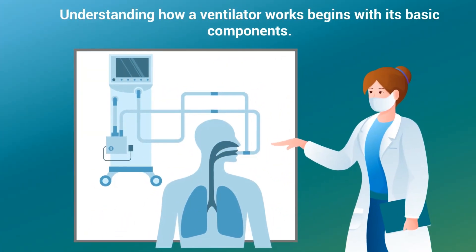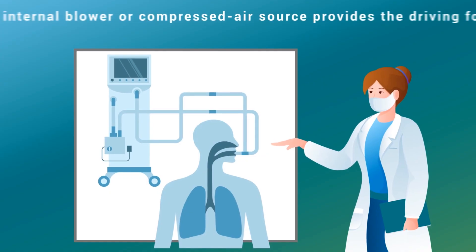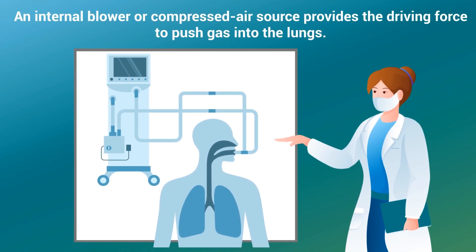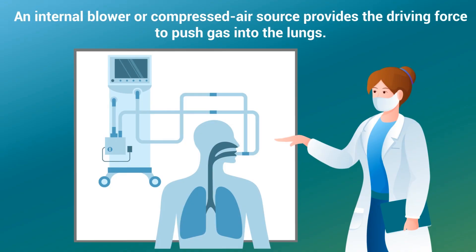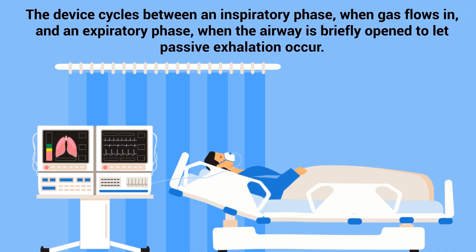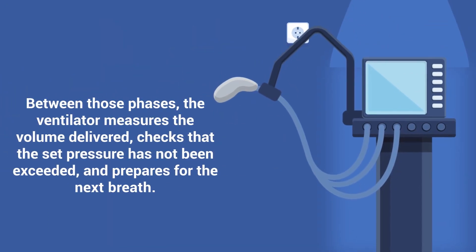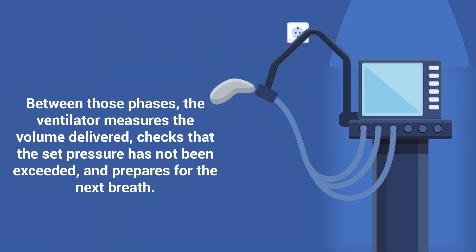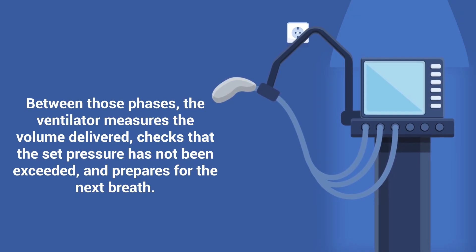Understanding how a ventilator works begins with its basic components. An internal blower or compressed air source provides the driving force to push gas into the lungs. Flow sensors track how quickly that gas moves, pressure sensors guard against excessive force, and microprocessors synchronize all of it according to the mode chosen at the bedside. The device cycles between an inspiratory phase when gas flows in and an expiratory phase when the airway is briefly open to let passive exhalation occur. Between those phases, the ventilator measures the volume delivered, checks that the set pressure has not been exceeded, and prepares for the next breath.